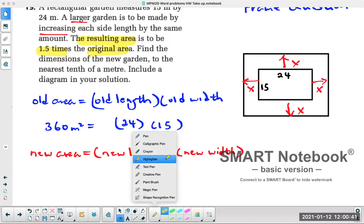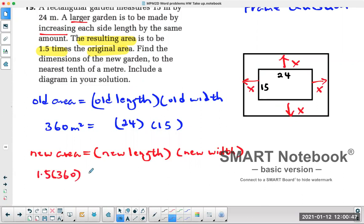So the new area, therefore, is 1.5 times 360. That would be the new area, or 540 meters squared. 360 times 1.5 gives you 540. So that's the new area.